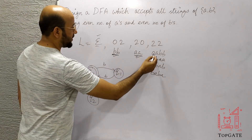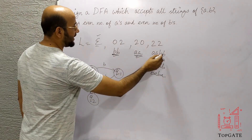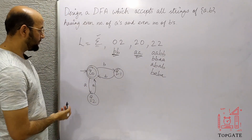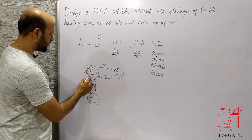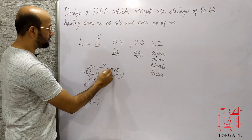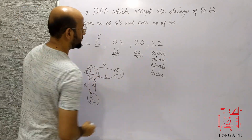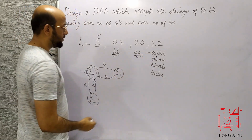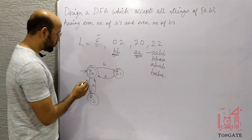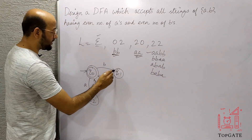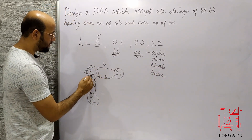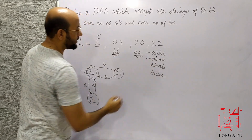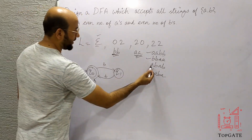Now let's handle AABB and BBAA. For AABB: from Q0, we go to Q2 with A, then back to Q0 with A — that gives us AA — then from Q0 to Q1 with B and back to Q0 with B — giving BB. So AABB is accepted. Similarly, BBAA follows the path through Q1 for BB and then Q2 for AA — so BBAA is also accepted.